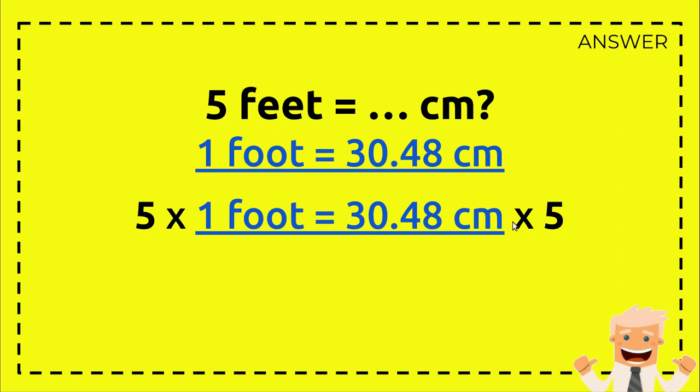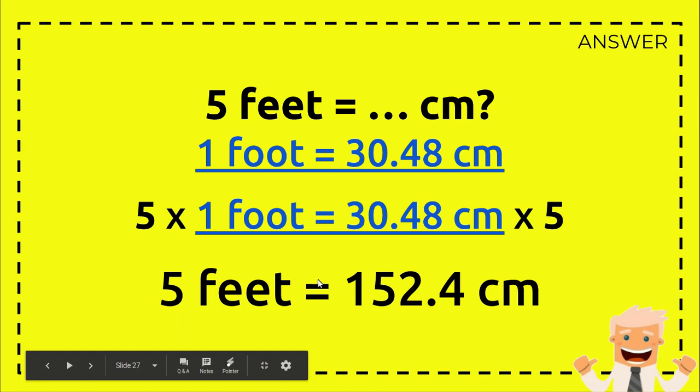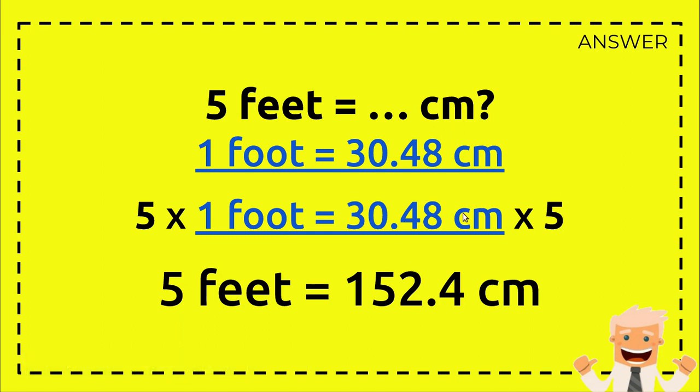Which is why we have this equation: 5 times 1 and 30.48 times 5. So 5 times 1 foot equals 5 feet, and then 30.48 centimeters times 5 equals 152.4 centimeters.